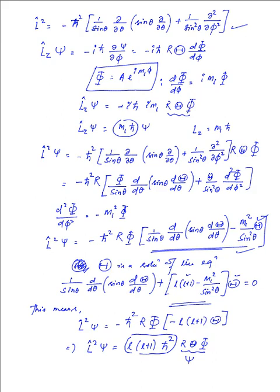In the final installment of this part of quantum mechanics related to the hydrogen atom, we shall be discussing the selection rules, which are very important, along with the results we have inferred, and also the probability density and expectation values. Till then, thank you for watching.